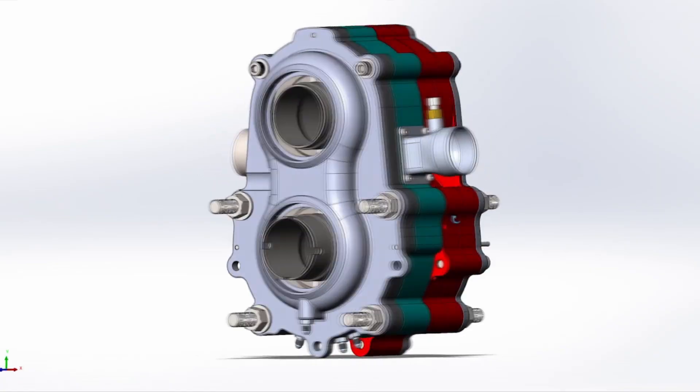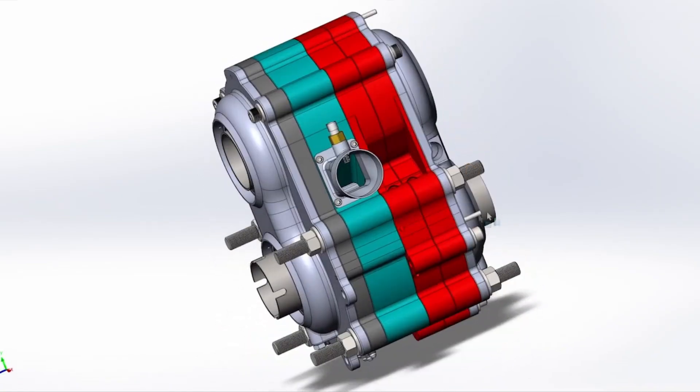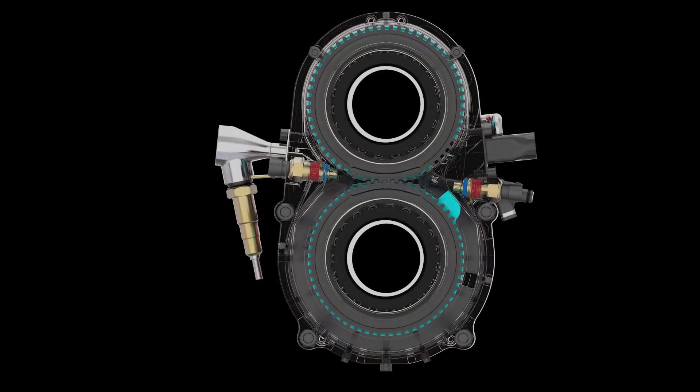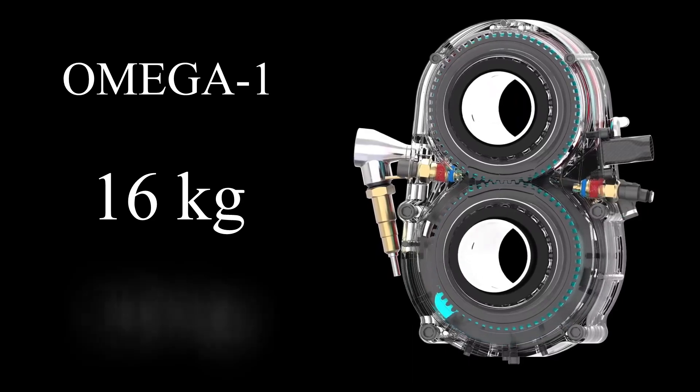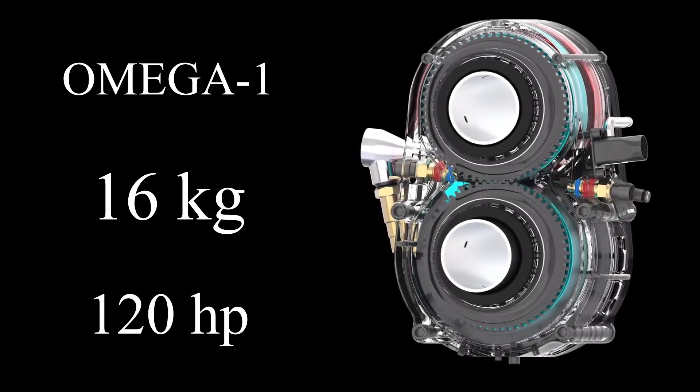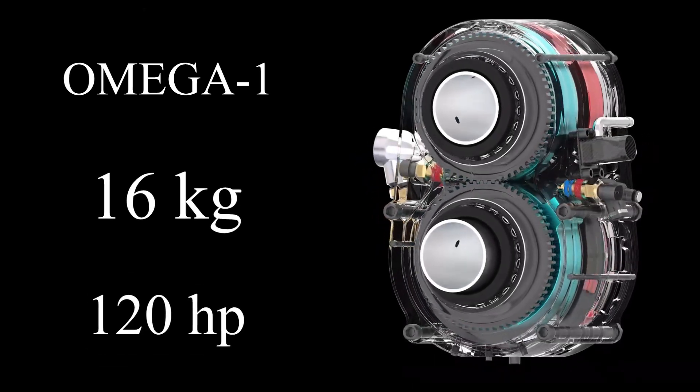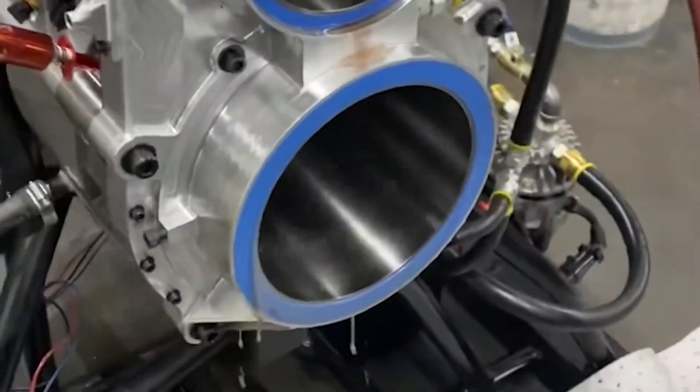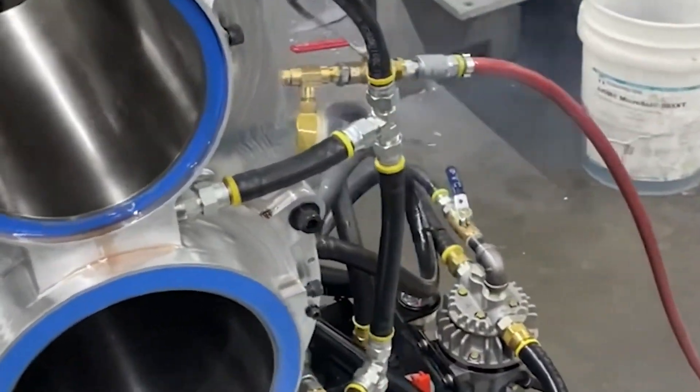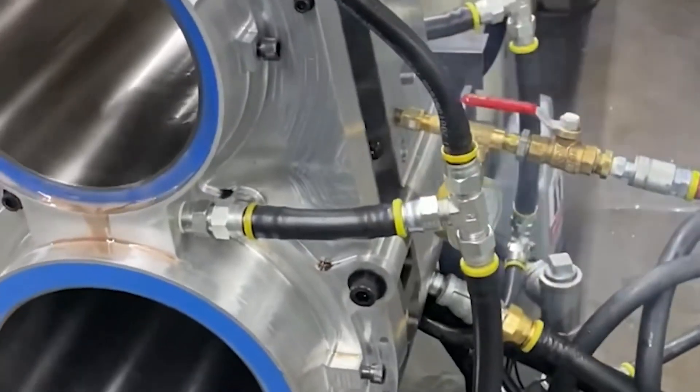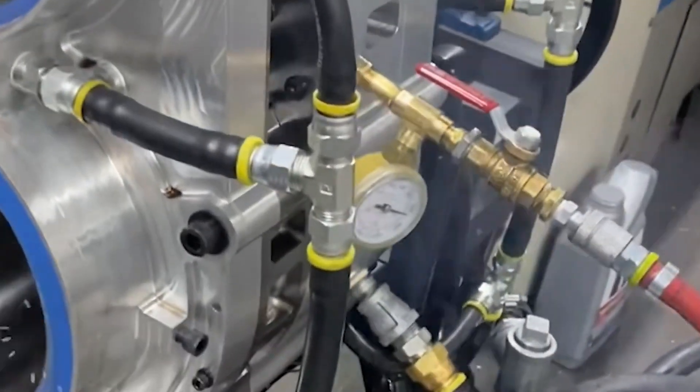Over a year ago, we were introduced to a revolutionary internal combustion engine from Astron Aerospace called Omega-1. Theoretically, this engine seemed promising, weighing just 16 kilograms and producing 120 horsepower. But its only operation video showed oil leaking from all seals. At the time, developers explained this was due to it being one of the first prototypes with poor seals.